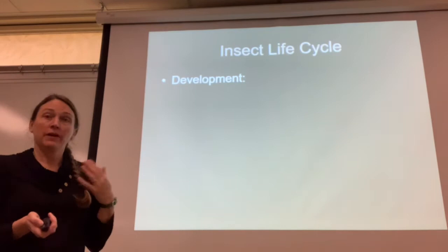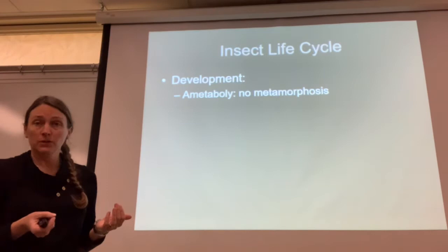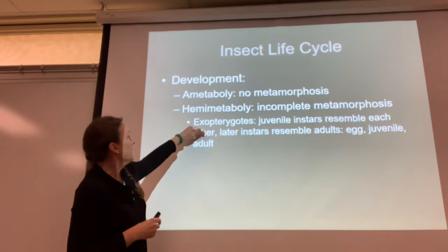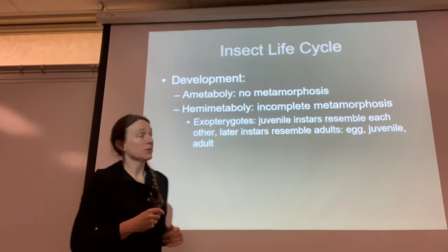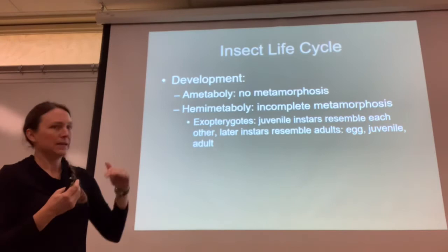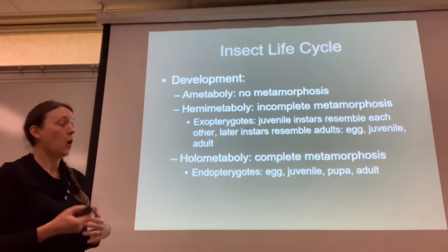There are a lot of different ways to be an insect. In terms of development, you can be an ametabolous organism, meaning that you don't have any kind of metamorphosis. You can be a hemimetabolous organism, which means you go through an incomplete metamorphosis. Exopterygotes are organisms where their juveniles resemble each other and later instars resemble adults — they just kind of change gradually from juvenile to adult, going from an egg to a juvenile to an adult.